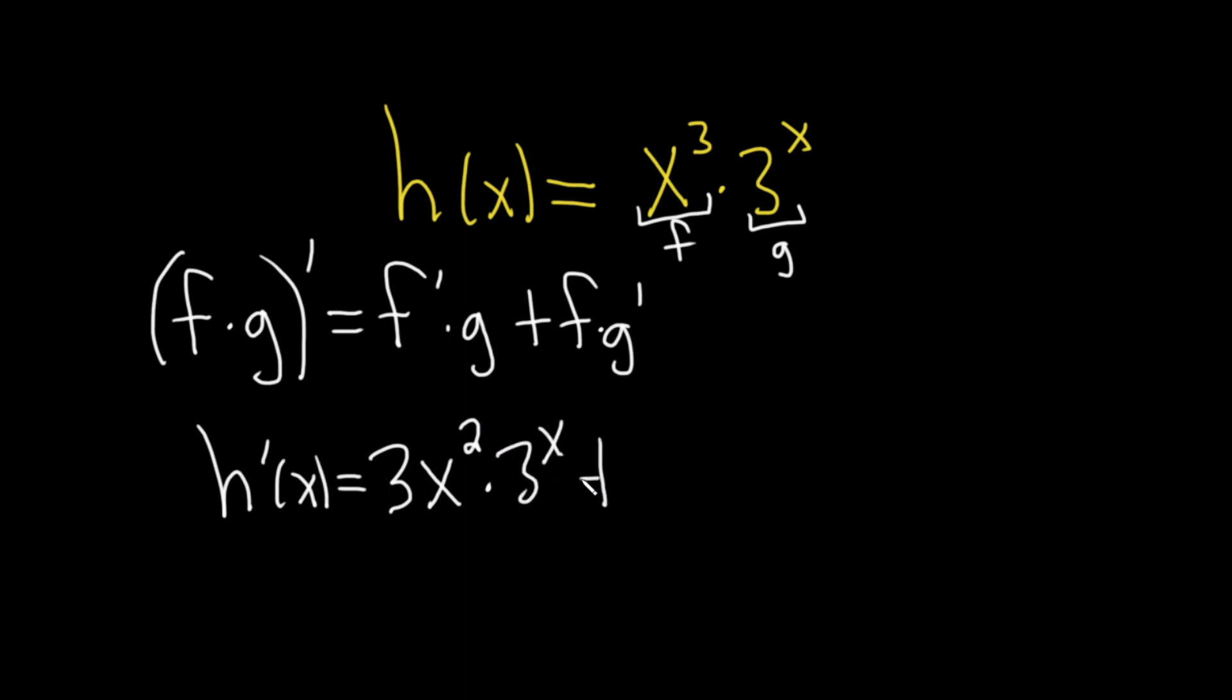Plus the first, so x cubed, times the derivative of the second. And this derivative is simply going to be 3 to the x, ln 3.